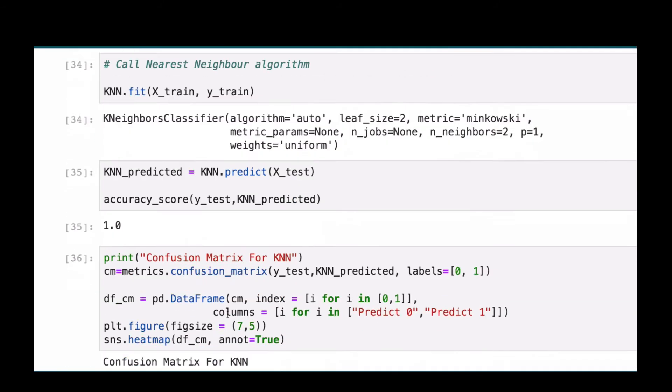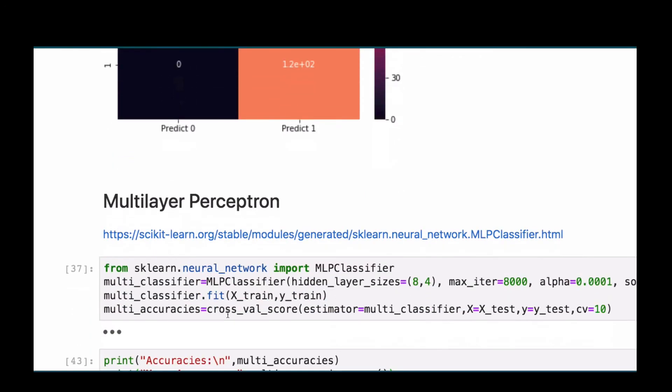K-neighbors classifier. We also build a confusion matrix to see how it is doing, and then we also touch on the multi-layer perceptron.